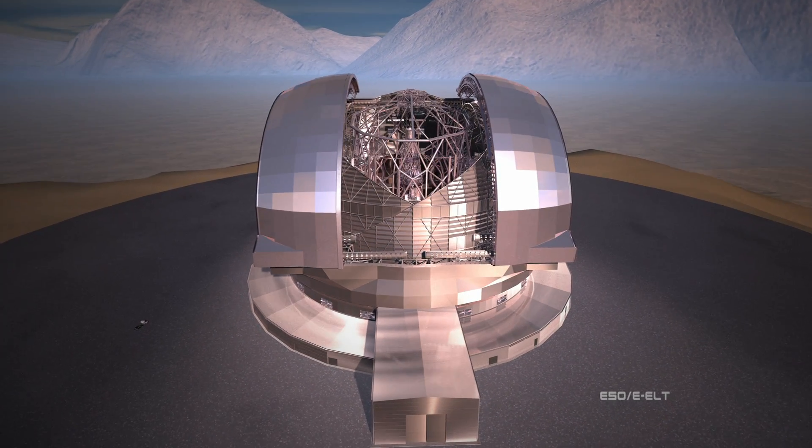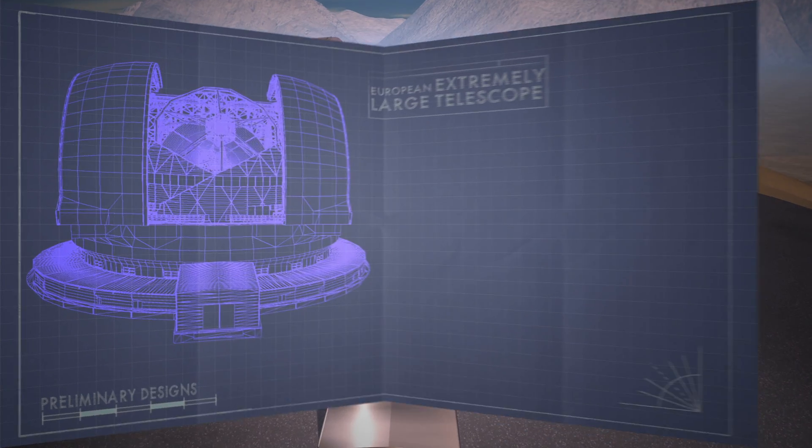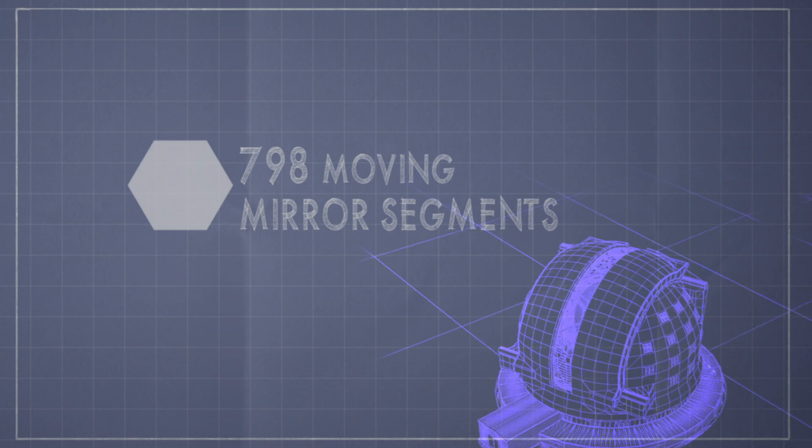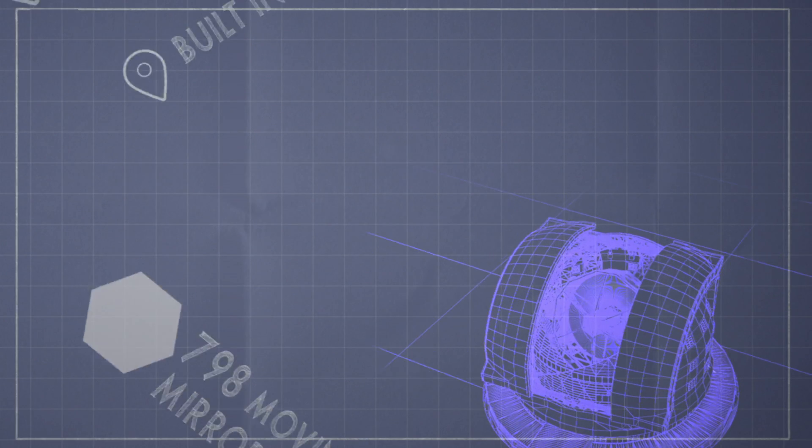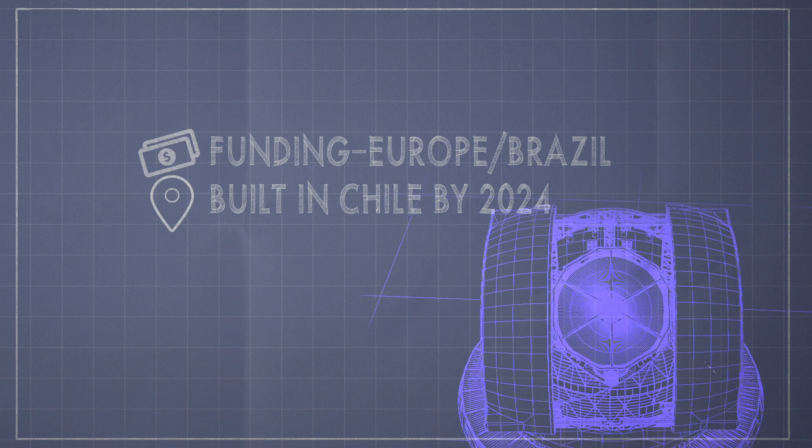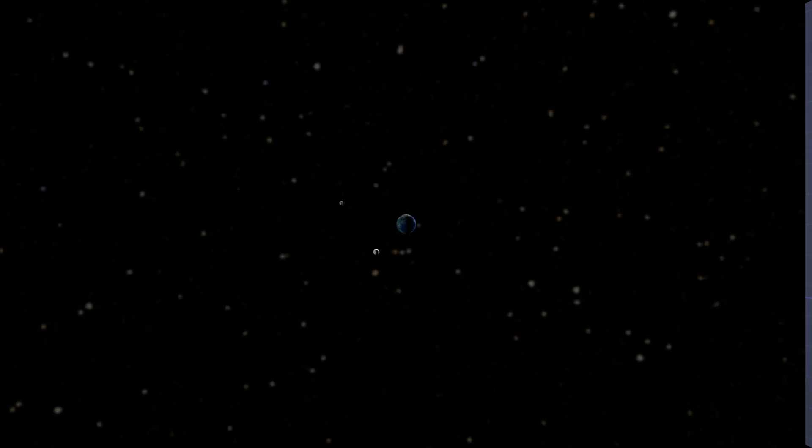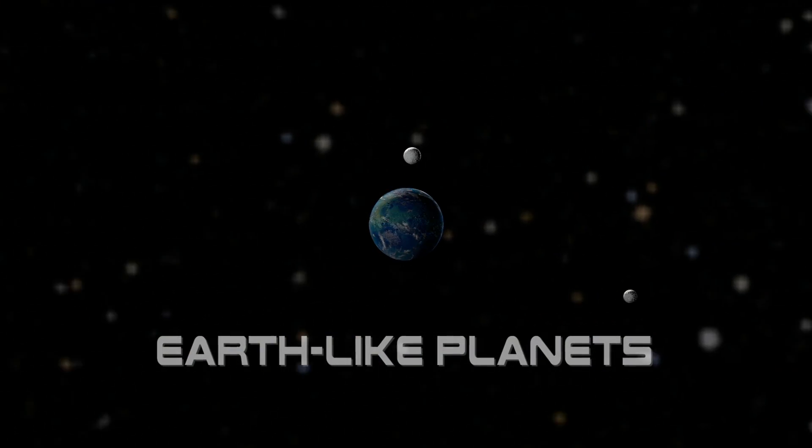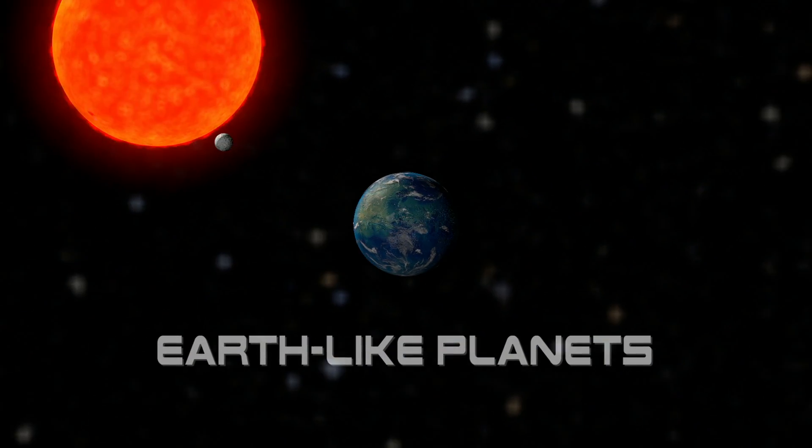The Extremely Large Telescope will be the world's biggest, with a main mirror bigger than a baseball diamond. Its moving segments correcting for distortion caused by the atmosphere. One of its goals is to find Earth-like planets orbiting stars in our galaxy, even detecting if they have oceans.